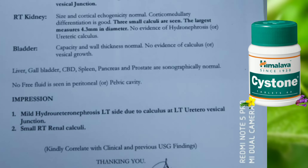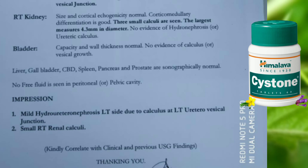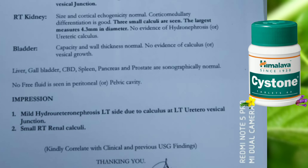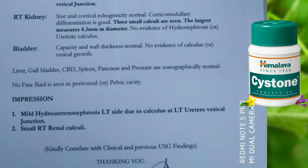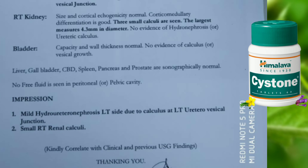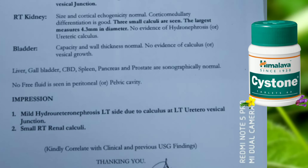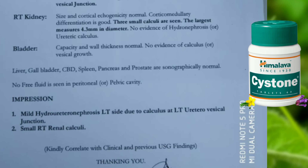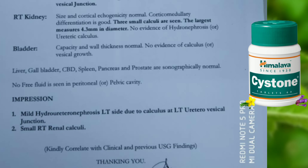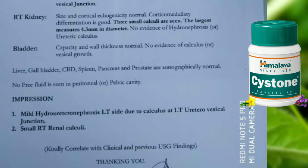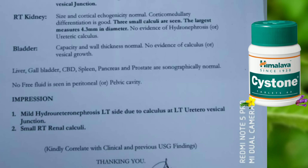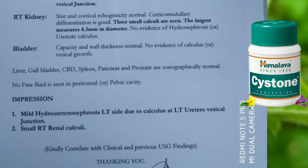Next, let's talk about the ureterovesical junction. The kidney is located in the lower back area. If you have any symptoms, you can have severe pain located in the lower back. It can also present as a condition affecting the urine.